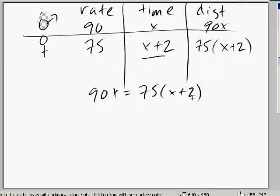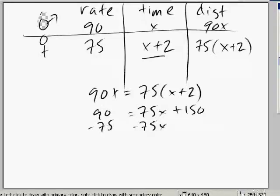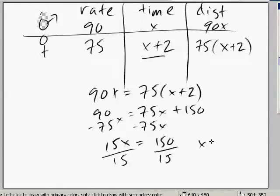And we just solve. So, 75x plus 150. And we subtract 75x from this side, subtract 75x from that side. So we divide 15x equals 150. So we just divide both sides by 15. x equals 10.